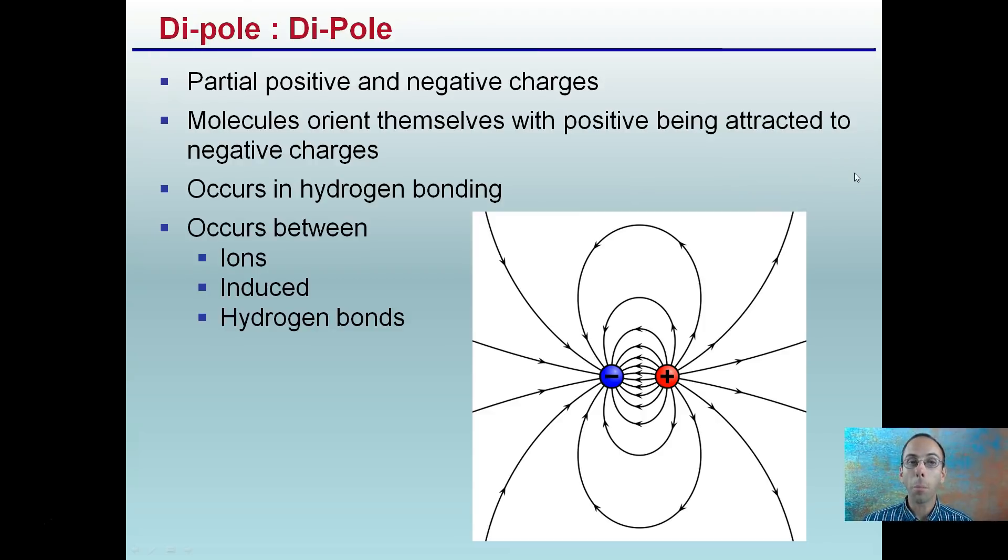Dipole-dipole interactions, these are partial positive and negative charges. Molecules orient themselves with positive being attracted to negative charges we see here. Kind of like, think about, almost like a magnet. And this occurs in hydrogen bonding. Also occurs in ions. It can be induced and also hydrogen bonding.